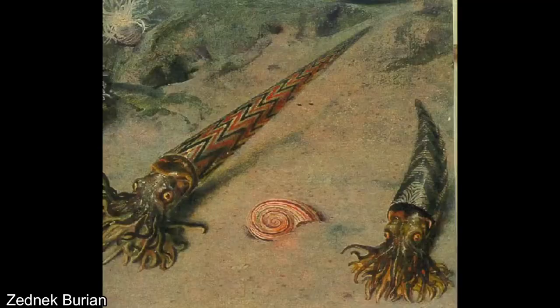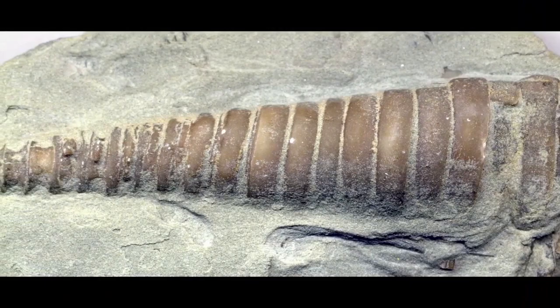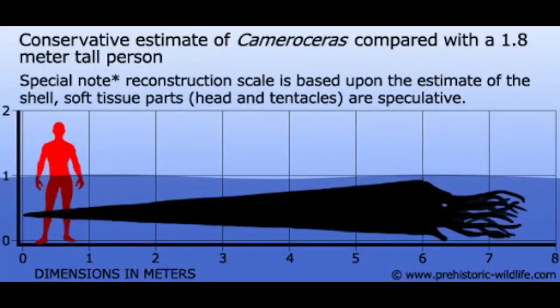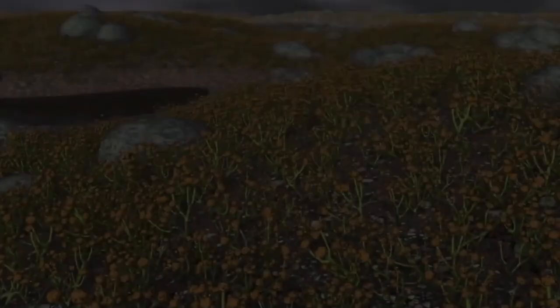The Ordovician also introduced the nautiloids — squid-like cephalopods known by their long, thin conical shells growing on their backs. Some genera, such as the Cameroceras, could grow up to 20 feet long and were equipped with almost a hundred tentacles to catch prey like trilobites and move them into its beak-like mouth. One of the most instrumental developments in earth's history was the proliferation of life onto the land. Arthropods, including insects, scorpions, and trilobites, began moving into lagoons and freshwater environments, slowly inching closer to land.